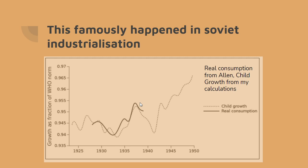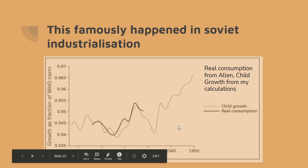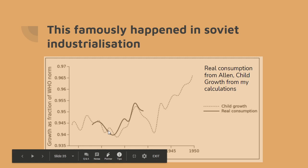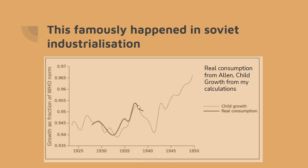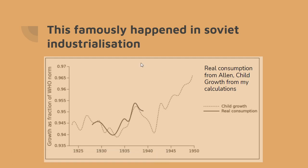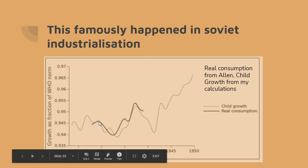There were attacks on Allen's data by Wheatcroft, and I independently tried to verify Allen's data by looking at child growth rates in the Soviet Union as a percentage of what the WHO says is the norm for children fed an adequate diet. The child growth curve is extremely closely correlated: during the early stages of investment, child nutrition was falling, then it rapidly improved, then fell again during the war and rapidly improved afterwards. The question is whether it would be politically acceptable in an already industrialized country to have a very sharp drop in the first few years.